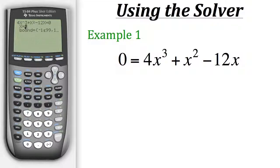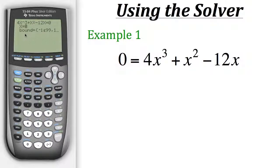Now the calculator asks us what we think our x value is, and it also gives us some bounds. The calculator has our bounds set from negative 1 times 10 to the 99th power all the way to positive 1 times 10 to the 99th power — in a sense, like having bounds from negative infinity to infinity. It's important that when you guess a value for your x variable, it stays within those bounds. For example, we can say that we think the x value will be 7. But to get the actual answer, we need to use the solve feature above our enter button. Since it's written in green, we need to hit the alpha button first, and then hit enter.